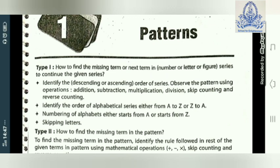Identify the order of an alphabetical series, either from A to Z or Z to A. The next term may involve an alphabetical series used either A to Z or Z to A form. Numbering of alphabets either starts from A or starts from Z, depending upon the question. Skip counting means skipping or leaving out certain letters.